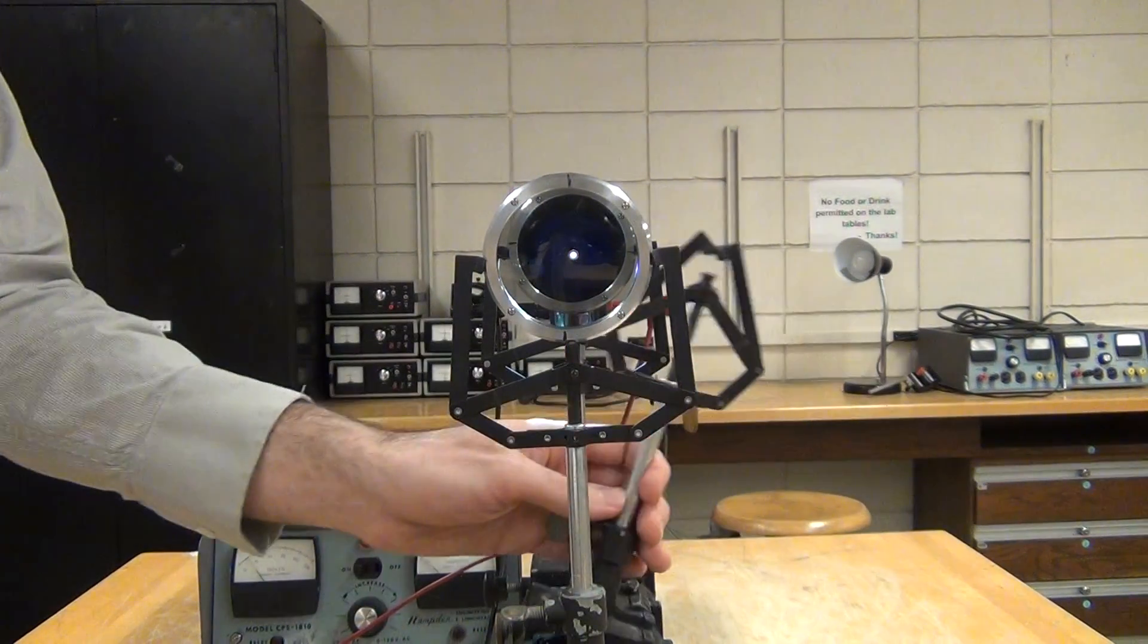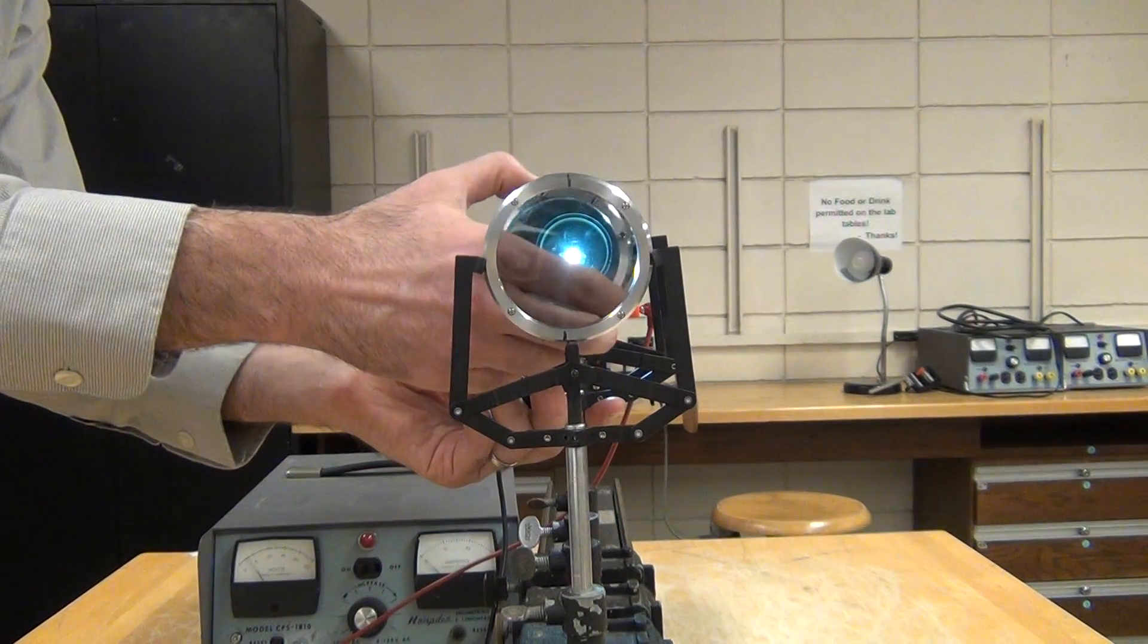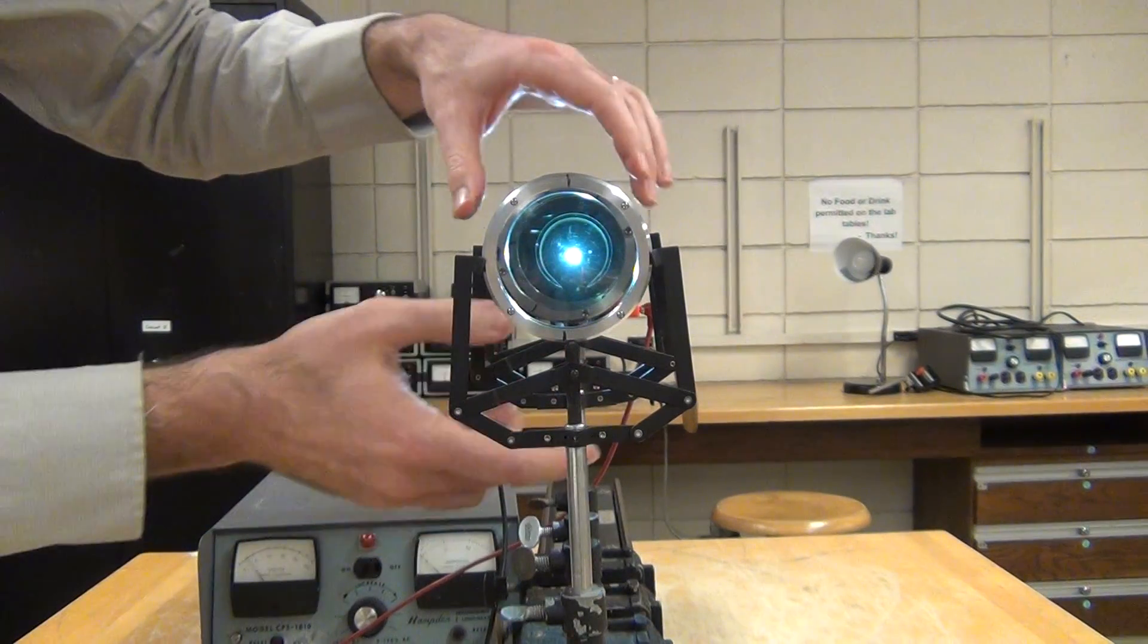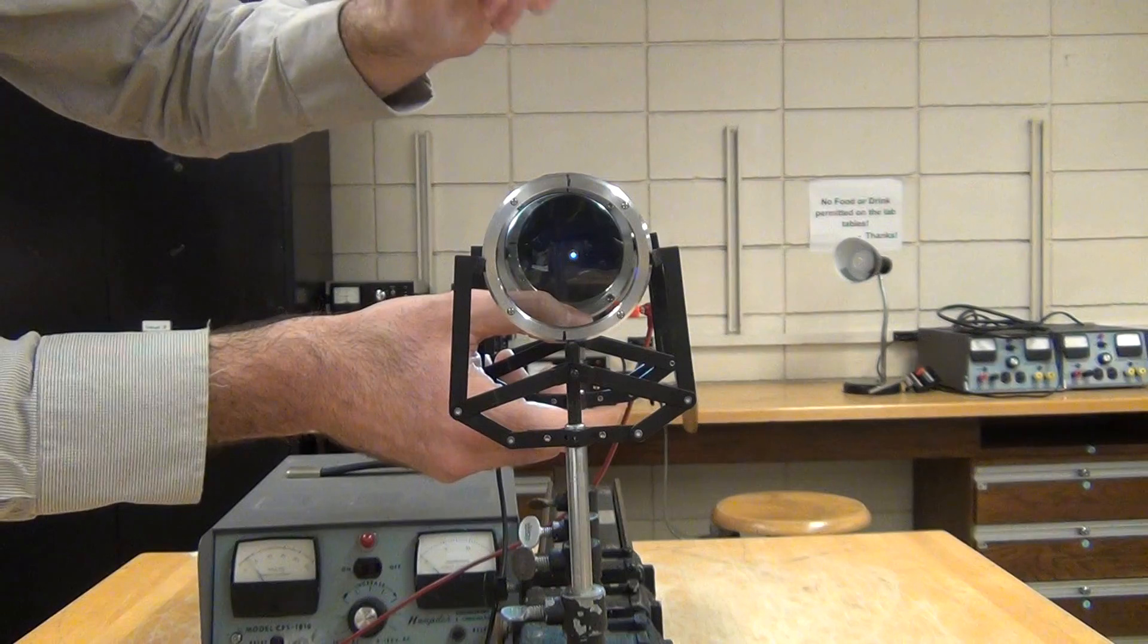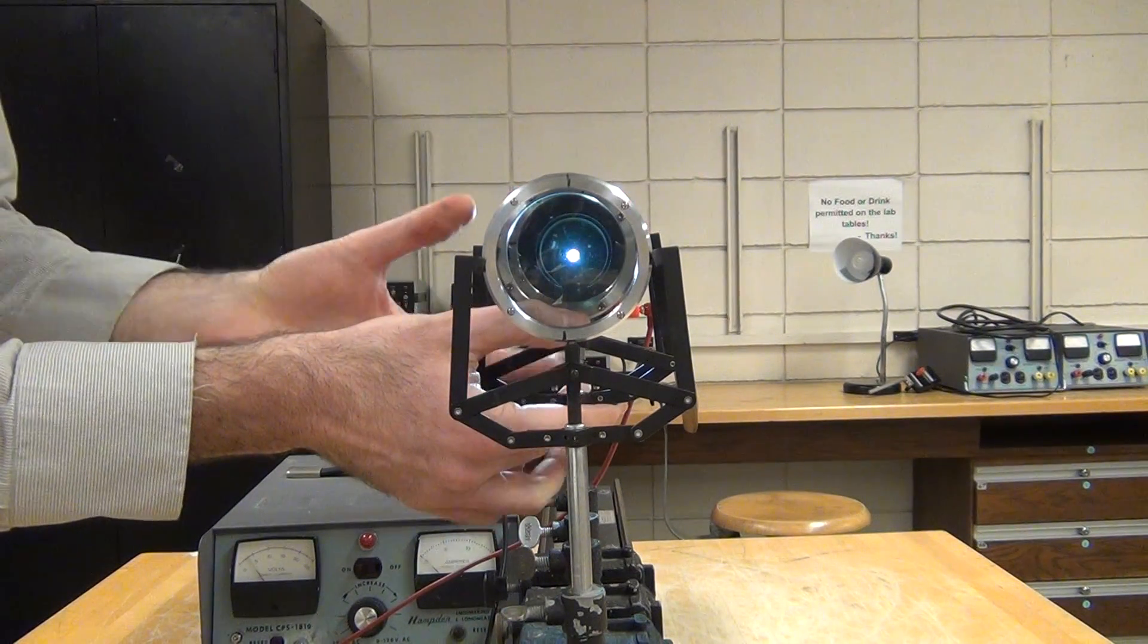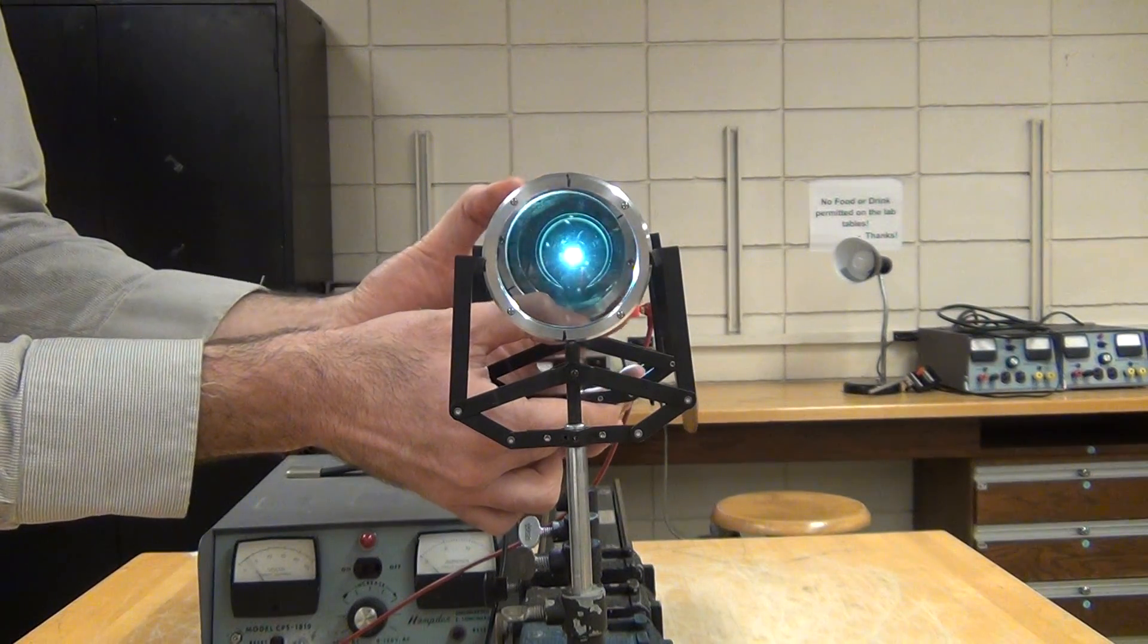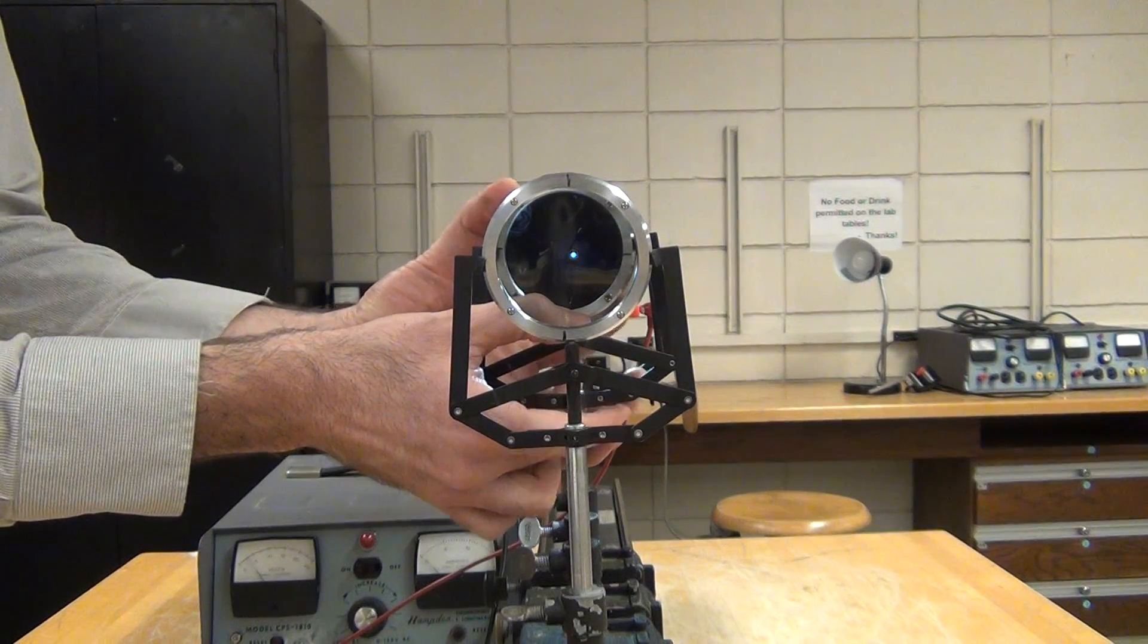And again, this is where that third holder comes in. If you want to be more systematic and have your hands free as you're investigating and writing, you can put that filter in the third holder and look for where it's dark. Then see how much you have to turn it to go to light, and then how much to get back to dark.